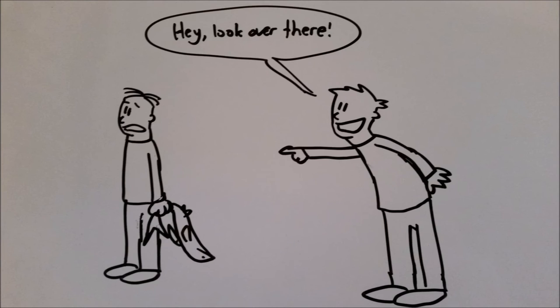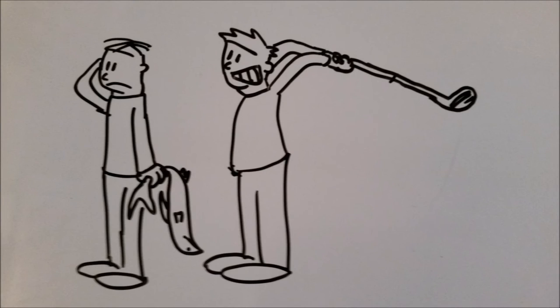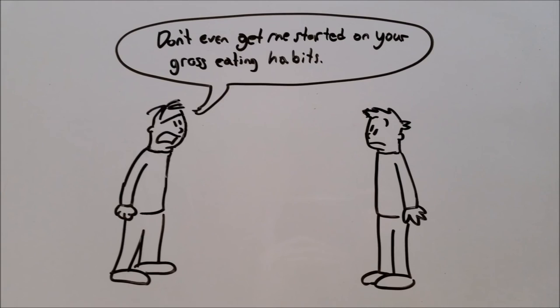Like the red herring fallacy, making a non-sequitur argument diverts the topic at hand, but usually it has absolutely nothing to do with the argument. If Bernard says, don't even get me started on your gross eating habits, he's practically changing the subject to defend his case.